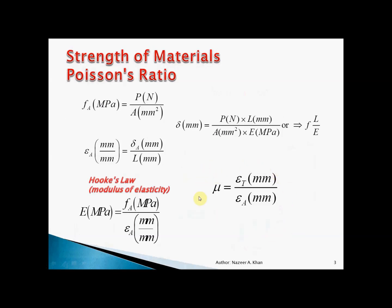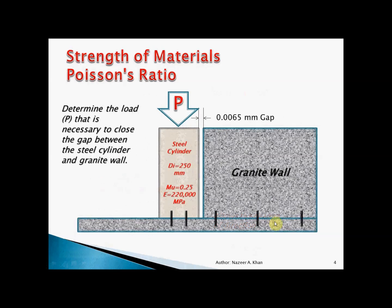The key formula to concentrate on is Poisson's ratio, because it is the only formula that allows you to change direction — from transverse to actual. For steel, Poisson's ratio is 0.25; different materials have different values. If you know two of the three quantities (Poisson's ratio, transverse strain, actual strain), you can solve for the third.